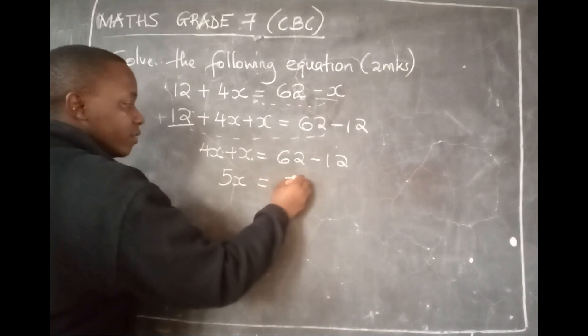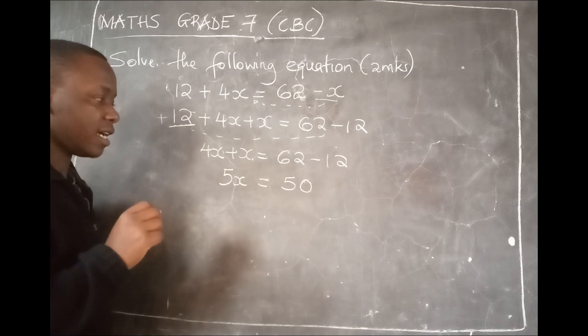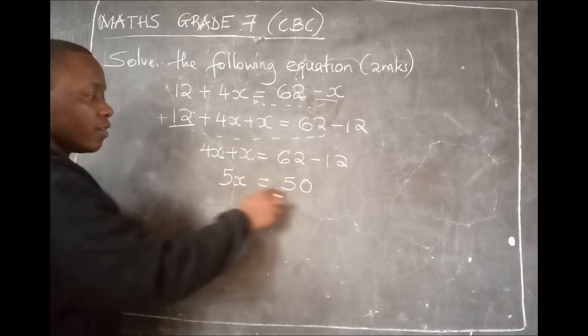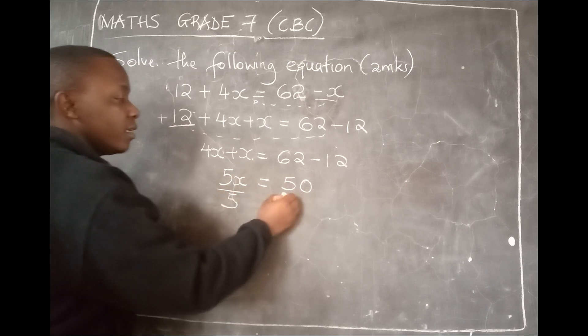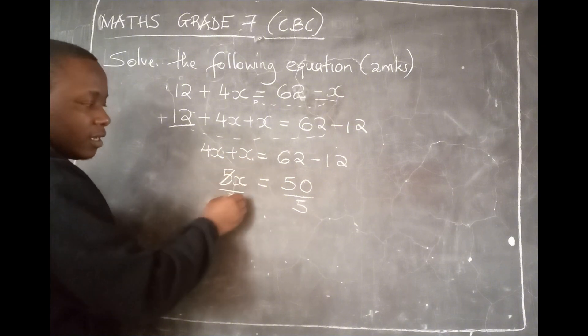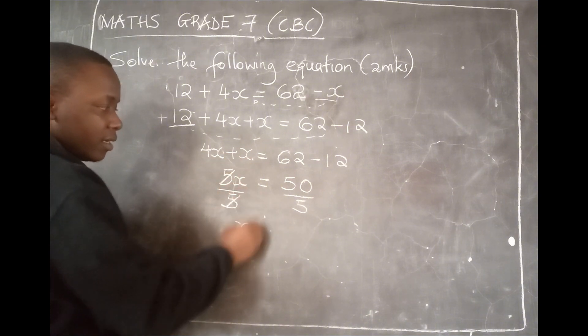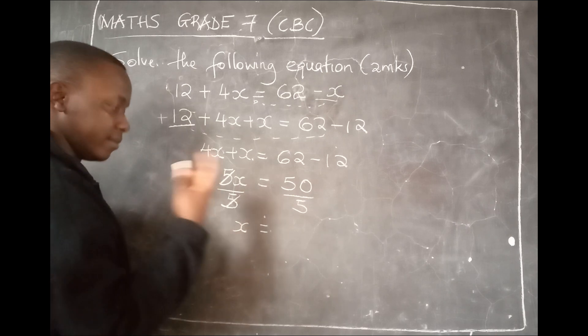At this step, I know many learners in grade 7 have a challenge here. If you want to solve for x in this case, you remove this 5. You divide both sides with this 5, so that this 5 can eliminate this 5 and this one remains as x. It equals, what is 50 divided by 5? 10. And that is the answer.